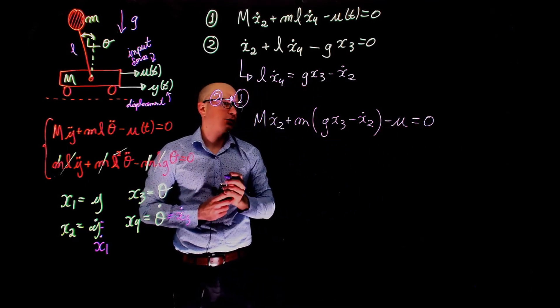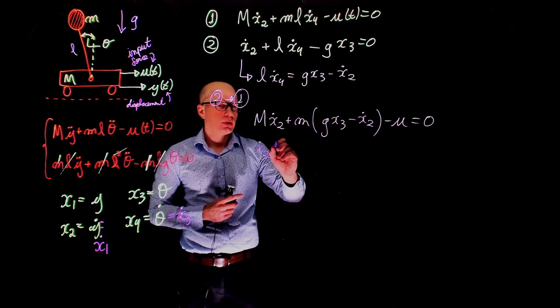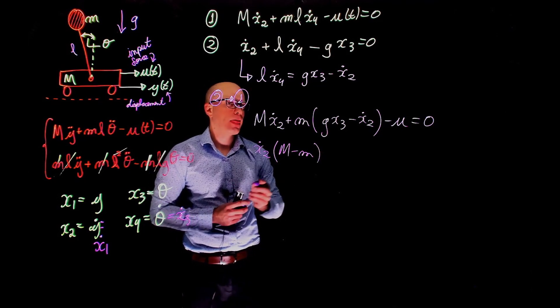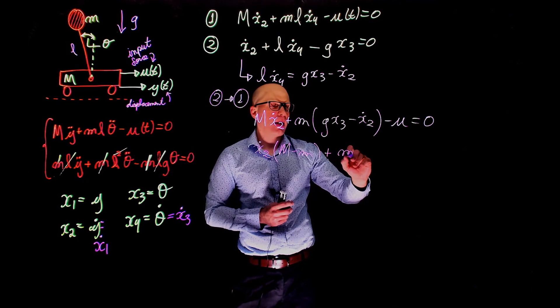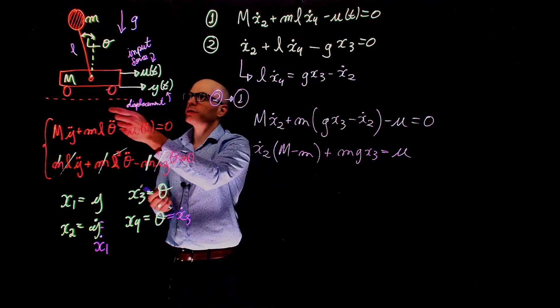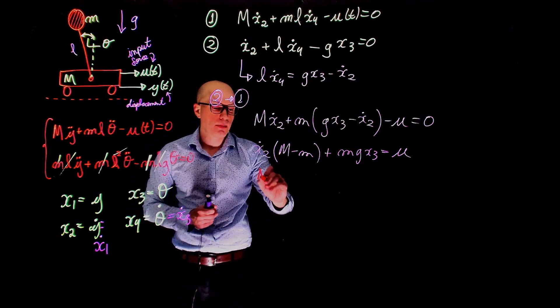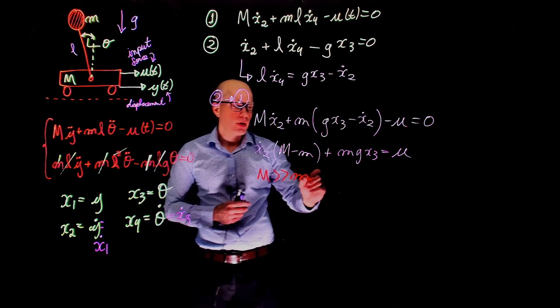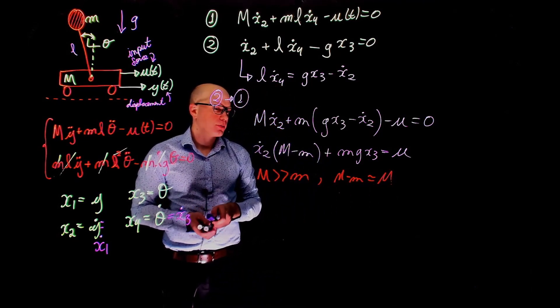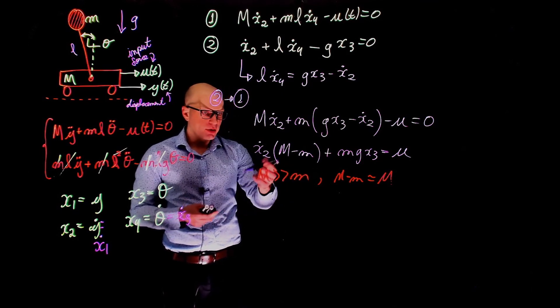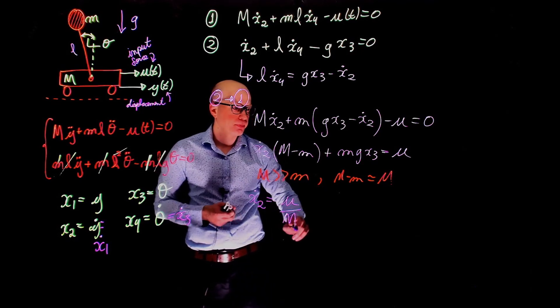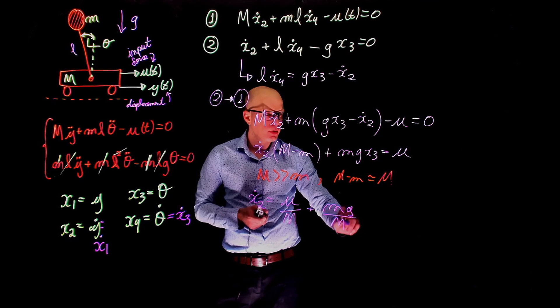We have m x2 dot plus m times l x4 dot, which is this, g x3 minus x2 dot minus u equals to zero. We can now group the terms with x2 dot. We have x2 dot times m capital M minus lowercase m plus mg x3 equals to u. And here we are going to make an assumption. Let's assume that the mass of the cart is much greater than that of the bob. So m is much greater than lowercase m, which means that m minus m is approximately m. So if this can be simplified to m, we have an expression for x2 dot. x2 dot becomes u over m plus mg over m x3.